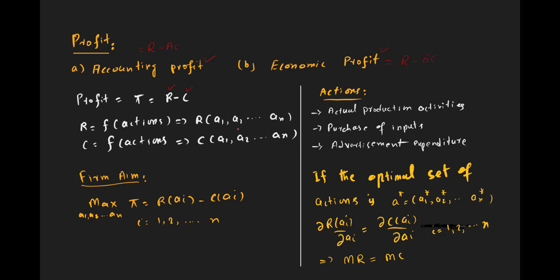The firm's aim is to maximize profit, which is the difference between total revenue and total cost. Total revenue and total cost depend upon certain actions of the firm, where actions i range from 1 to n.